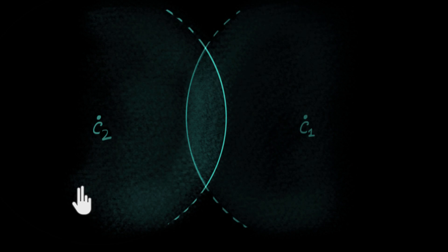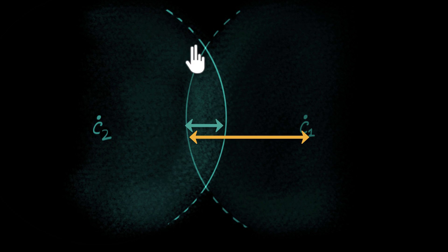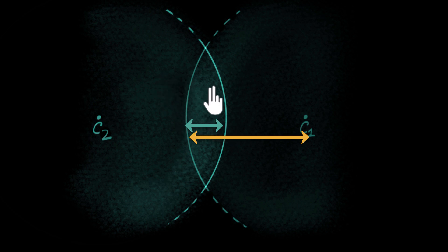A lens is just a refracting medium bounded by at least one curved surface. In our example, both surfaces are curved and spherical, meaning they are parts of a sphere. A lens is called a thin lens if the thickness of that lens is much smaller than the radius of curvature of each surface. In this diagram the thickness is exaggerated to make ray diagrams easier to draw, but we'll assume the thickness is actually much smaller than the radius of curvature.